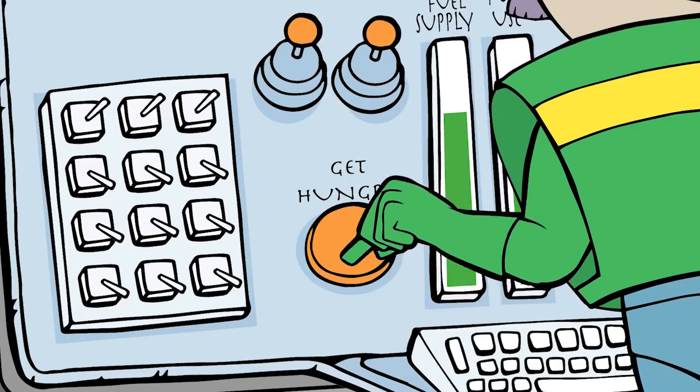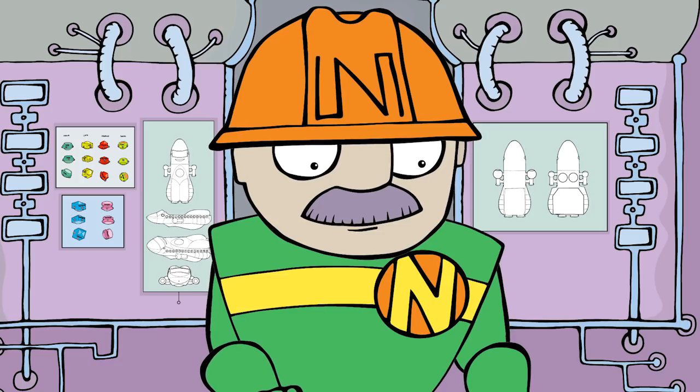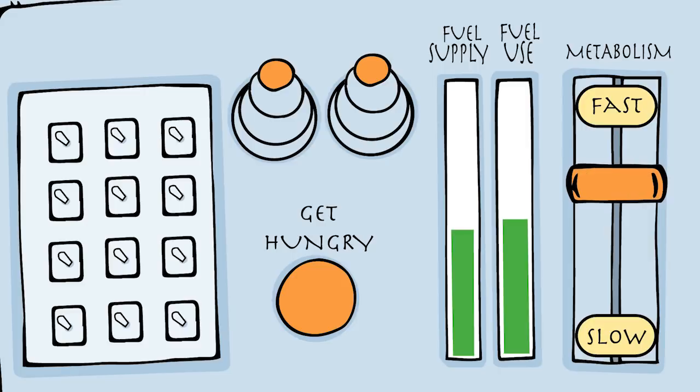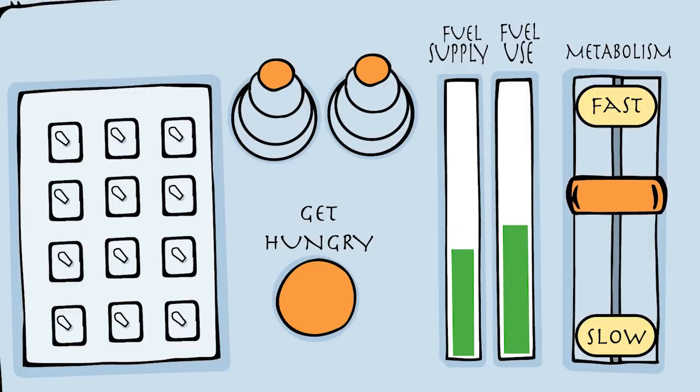As we just saw, Marty Metabolism will fire up the Get Hungry program when the Nautilus needs building materials and tools. But of course, Marty also makes you hungry when the ship is low on fuel.